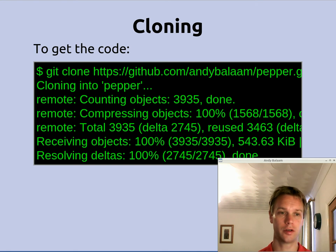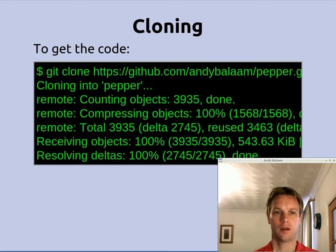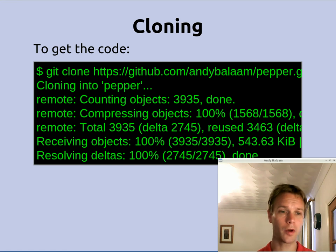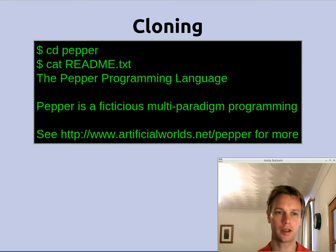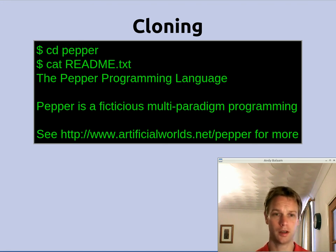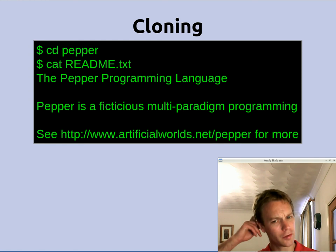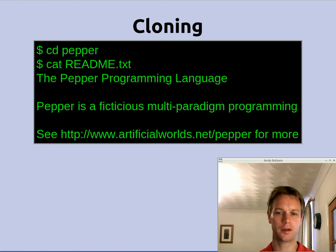To do a clone, you use the command git clone, and then you give the URL of the repository. You can get that from whatever project you're cloning. When you do it, git will give you a load of information about what it's pulling down, and once it's finished, you'll have a directory that you can CD into. In this case, CD into that pepper directory, which is the name of the thing we've cloned. You can see we're printing out the contents of the readme.txt. You've also got the full history, so you can do a git log, and you could do a git k to see all the branches.